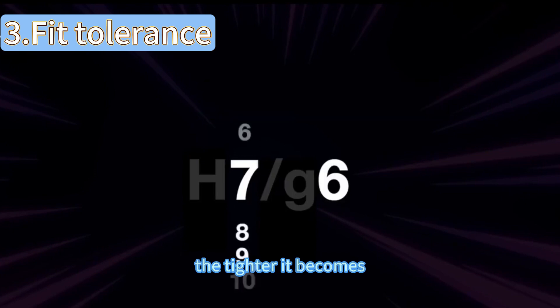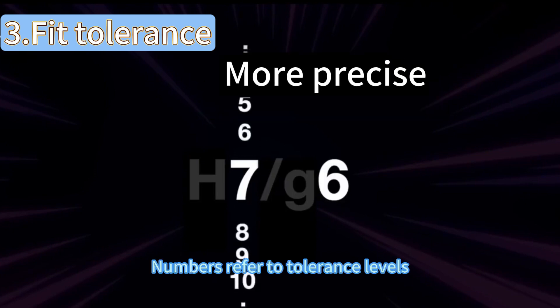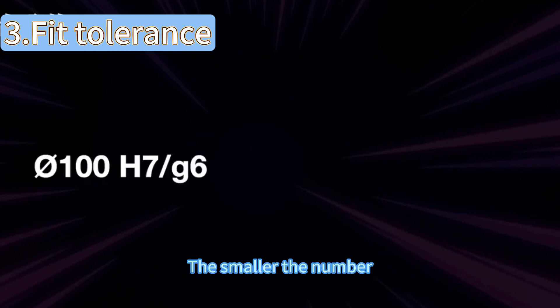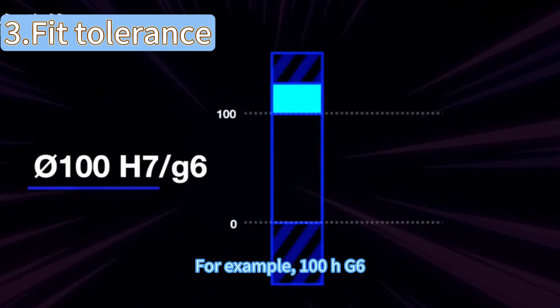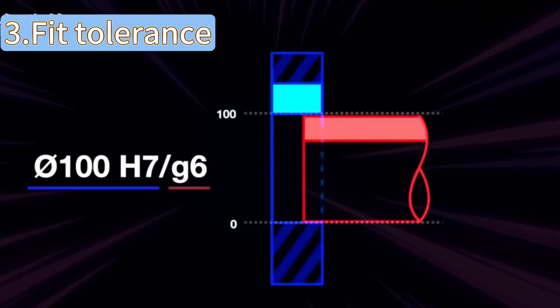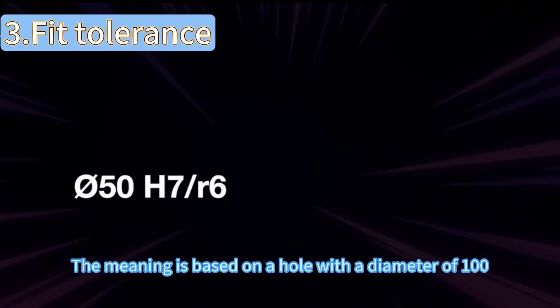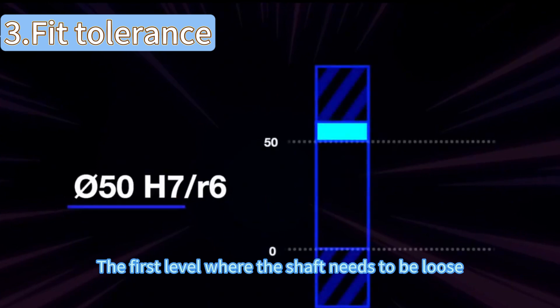H is a benchmark letter. The farther forward it is, the looser it becomes; the later it is, the tighter it becomes. Numbers refer to tolerance levels, also known as precision. The smaller the number, the smaller the tolerance range, and the more precise it becomes. For example, 100 H7/g6 means based on a hole with a diameter of 100, the first level where the shaft needs to be loose, which is a clearance fit.